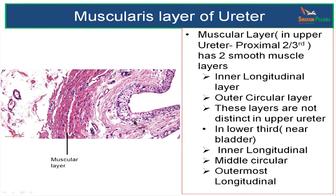Let us now study the other layers in the wall of the ureter. Next to the mucosa is the muscular layer. There is a difference in the arrangement of the muscular layer in the upper ureter and in the lower third of the ureter.